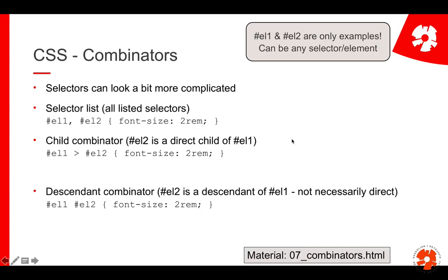Now we look at selectors that can be a bit more complicated — so-called combinators. A combinator is basically a combination of different selectors and things are applied to different elements. We have a few different ones. The first and simplest is a list: font-size 2rem is assigned to every element that has ID EL1 or ID EL2. You could add a comma and any selector — p, table, or whatever. It's simply to reuse the same style for more than one selector.